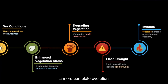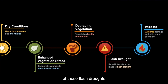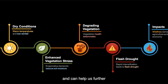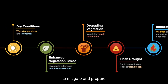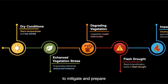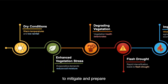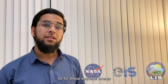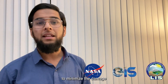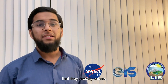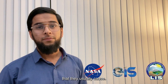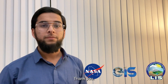In summary, we found that using satellite data along with computer models can help us capture a more complete evolution of these flash droughts and can help us further mitigate and prepare for such extreme events to minimize the damage that they usually cause. Thank you.